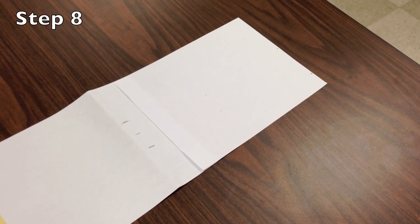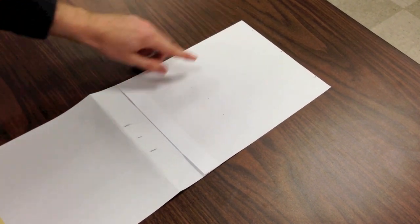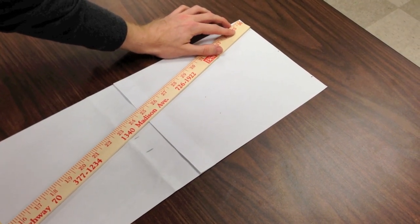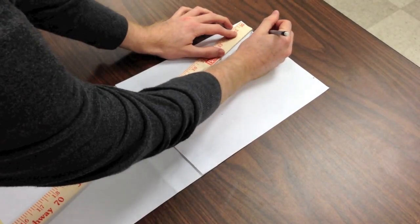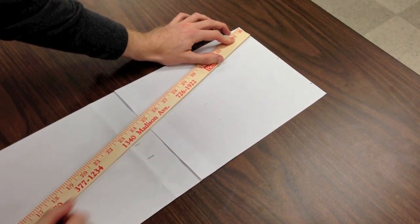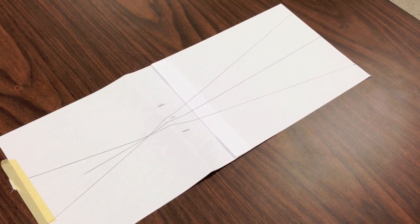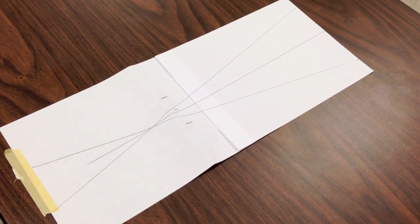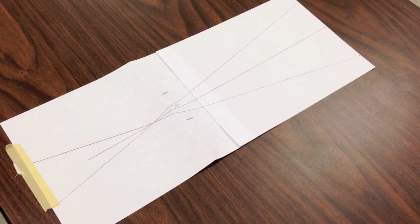Now draw a line connecting each far point to its corresponding near point. Once you've drawn all three lines, this is what it should look like. And all three should intersect at a point behind the plane of the eyes.